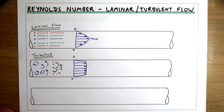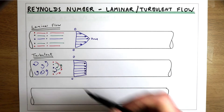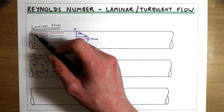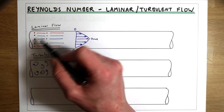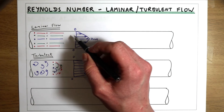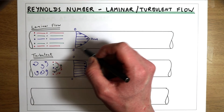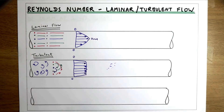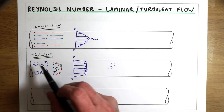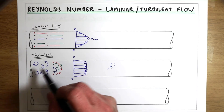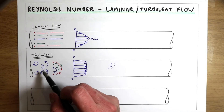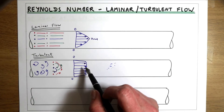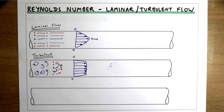So what we've said so far is that for slow laminar flow, all of our particles stay in line and we have a parabolic velocity profile. For turbulent flow where the flow is faster, we have chaotic movement of our fluid which leads to a much flatter velocity profile.